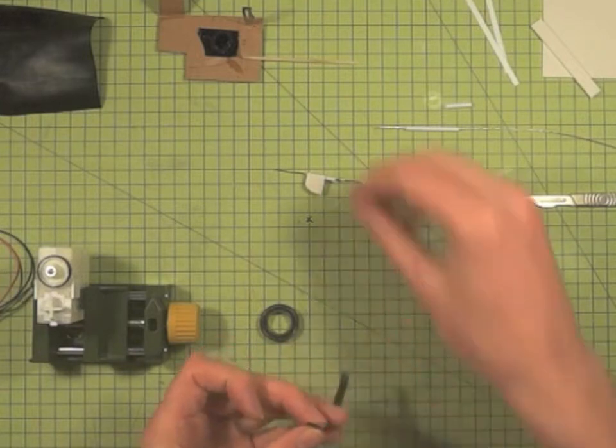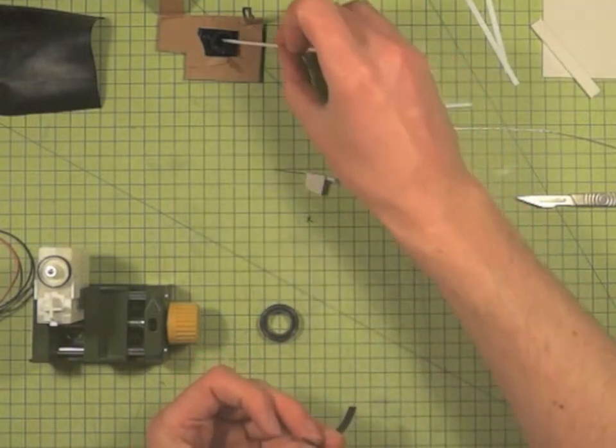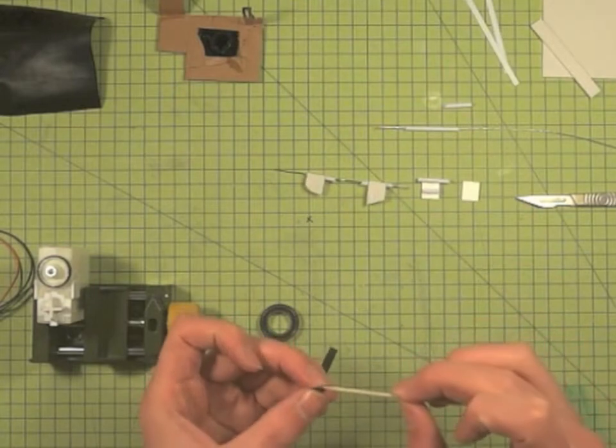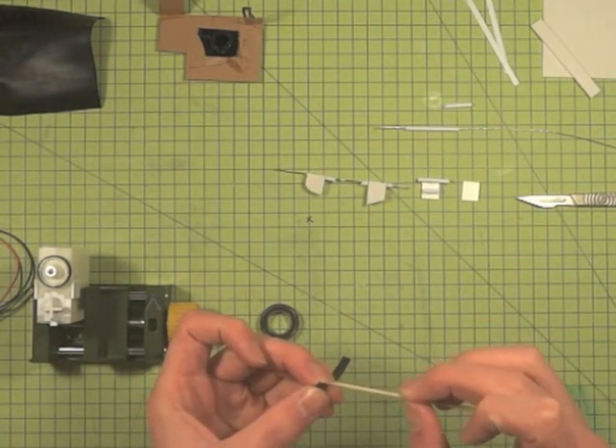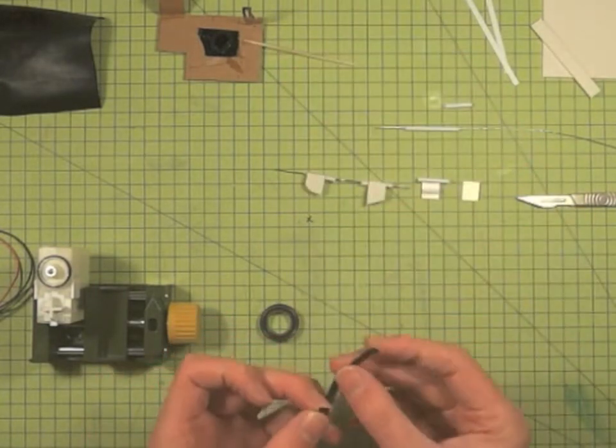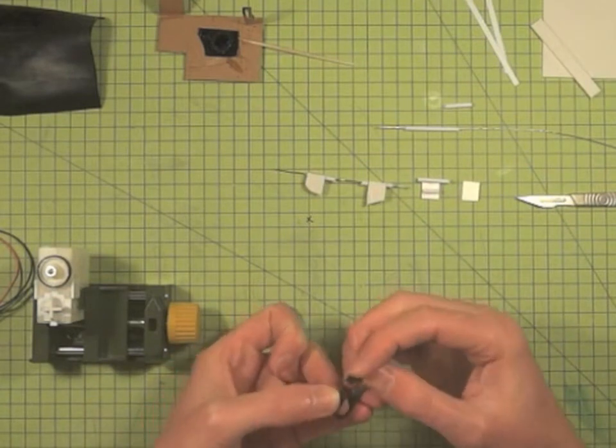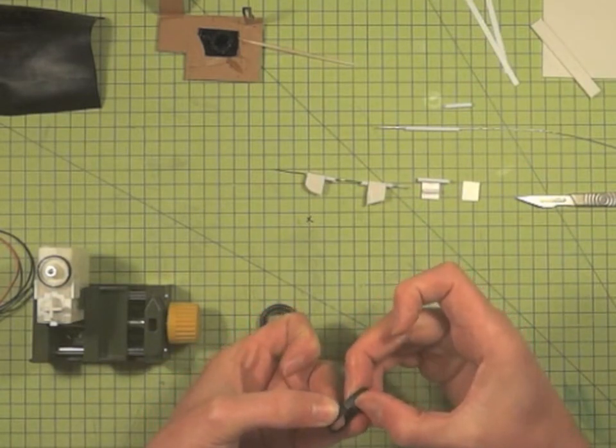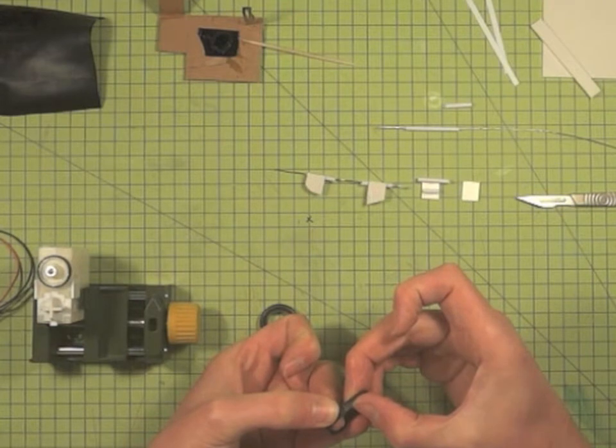Now the second trick is that you want to take a cocktail stick again and apply a very small amount of glue onto the end of the rubber. And then you bring the two pieces together, and I admit, this is quite fiddly to align them properly. It might take you a couple of attempts.